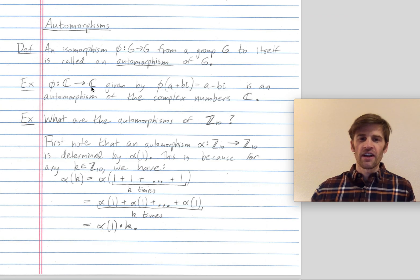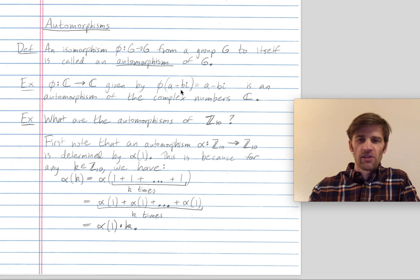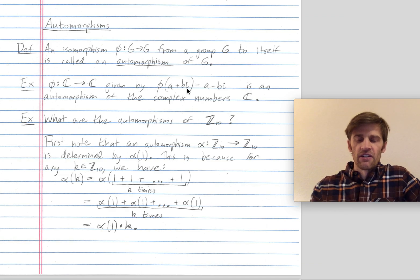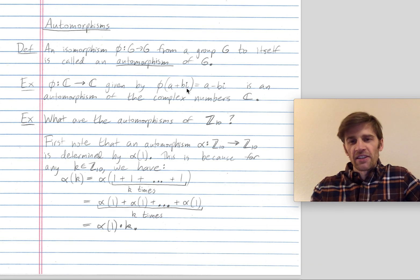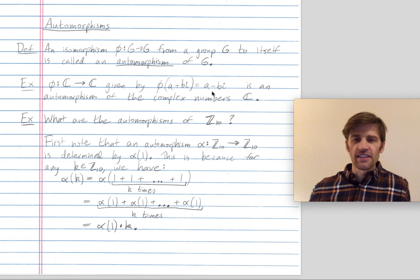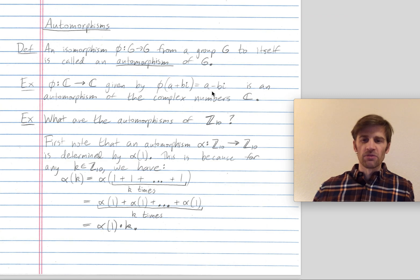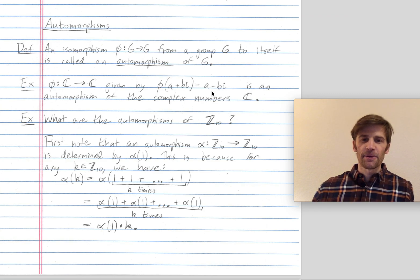One automorphism is you can map the complex number a + bi, where i is the square root of negative one, to its complex conjugate a - bi. This is an automorphism — it preserves the group structure even though it's not the identity map.